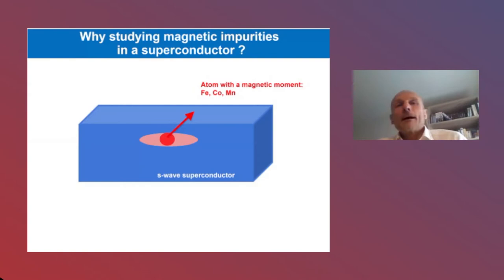In order to motivate that talk, you may worry about why studying magnetic impurities in superconductors. It's apparently a solved problem. Typically what I have in mind is consider iron, cobalt, manganese atom inside an S-wave superconductor. What do we know about it?